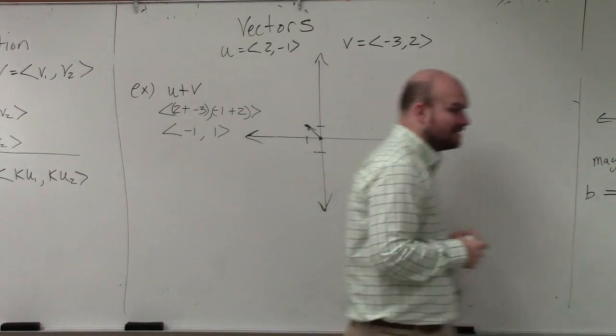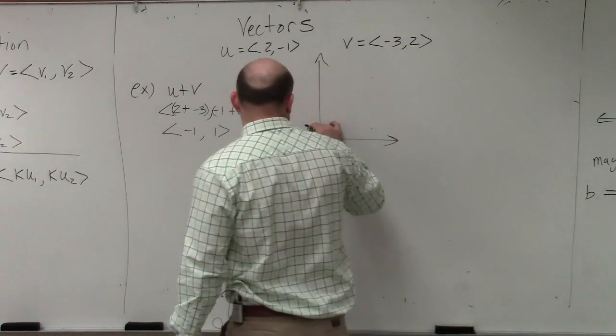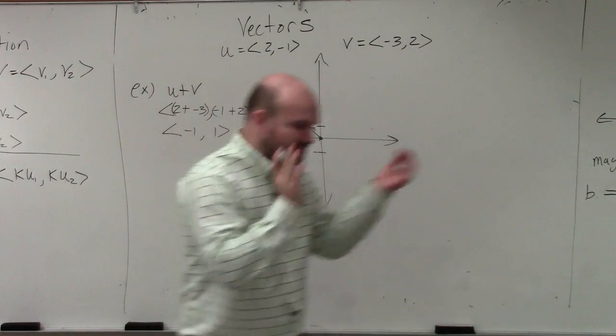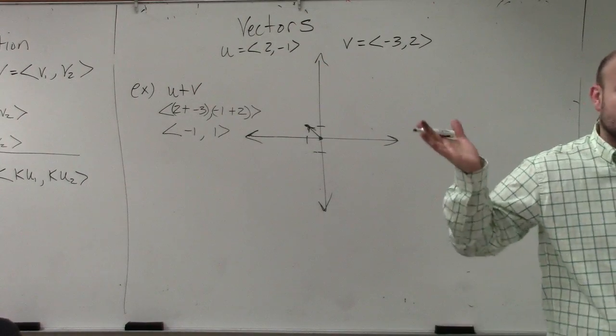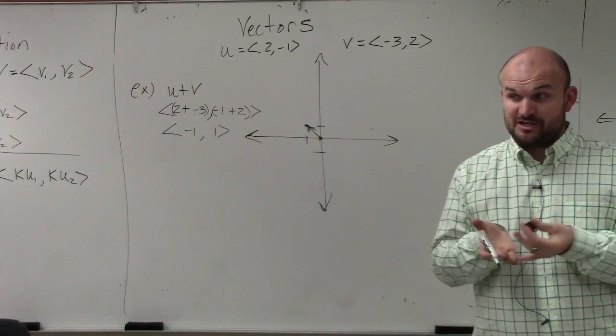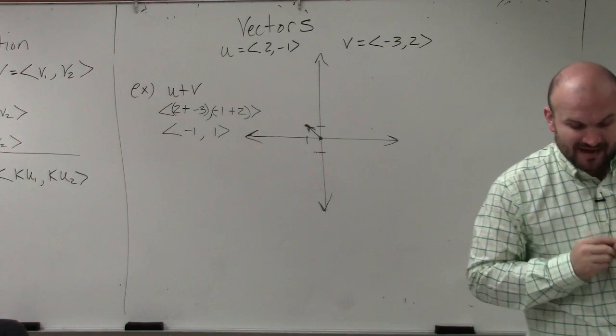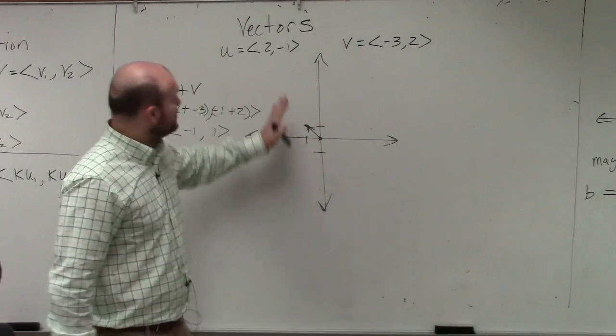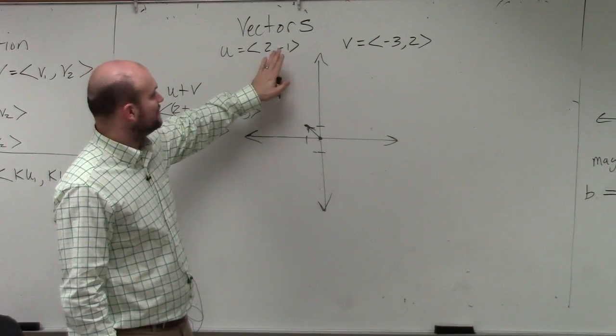A lot of times, what we look at is we just label this. So if you're going to label this, you just label this u plus v. Now, I want you guys to have a visual understanding because sometimes what they might ask you is to actually represent this on the graph or just know what this graphically is going to be. So sometimes it's helpful to actually graph both of these separately.